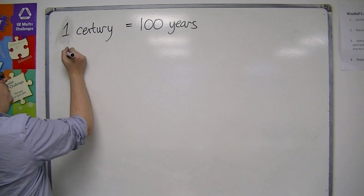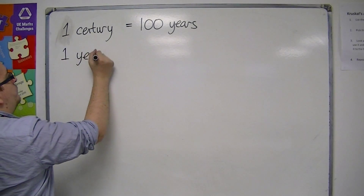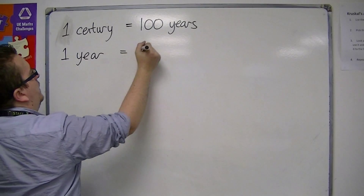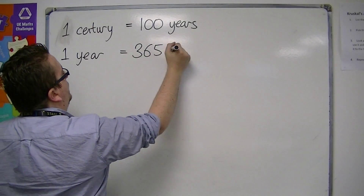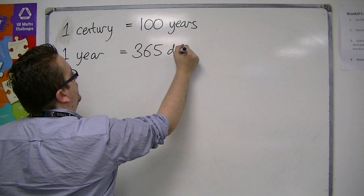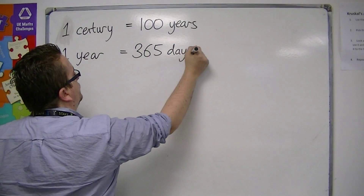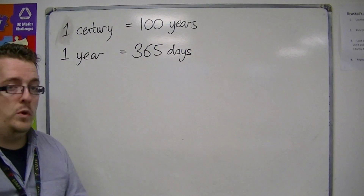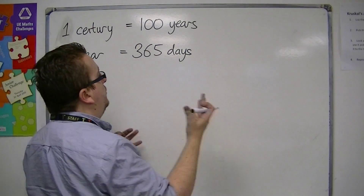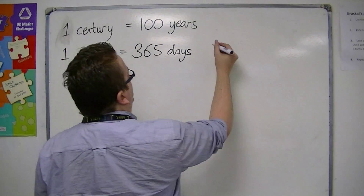And then we've got one year, which is 365 days. Or we could say twelve months.